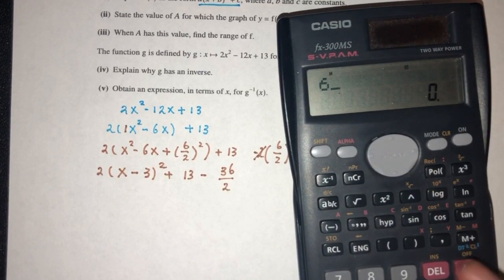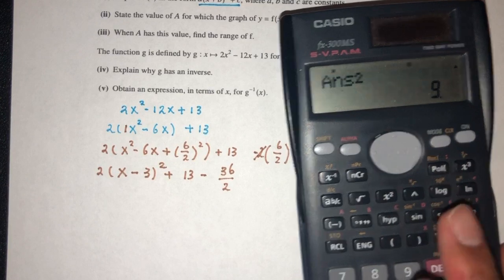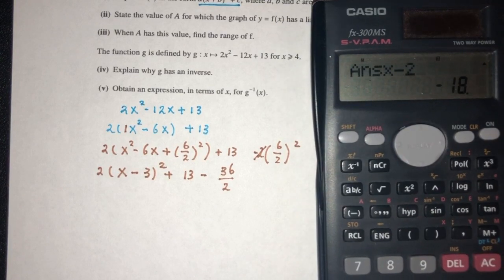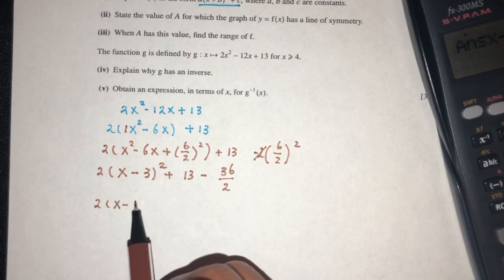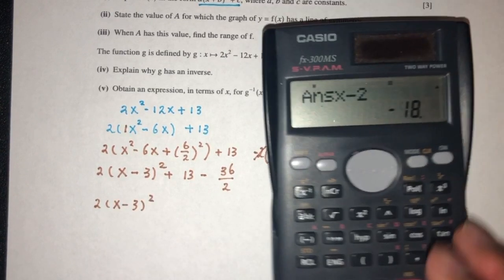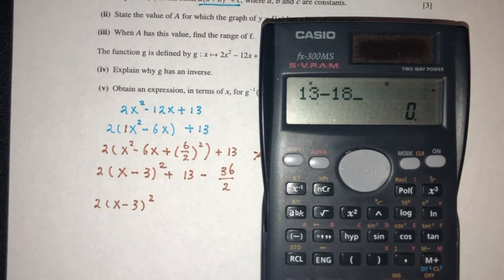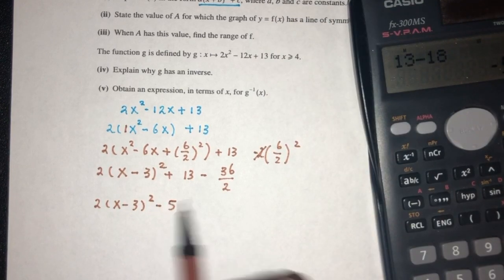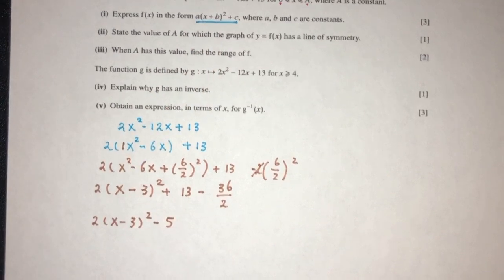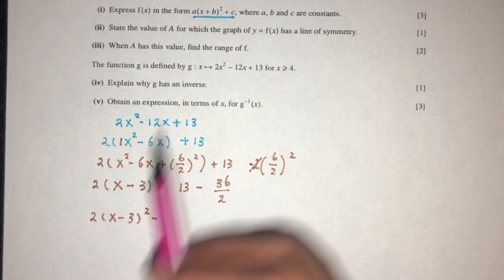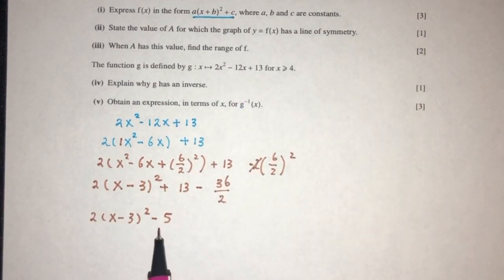So let's try. 6 divided by 2, square, times minus 2, should be minus 18. So here we have 2, x minus 3, square, 13 minus 18 should be minus 5. So here we have this in this form, where the value of a is 2, b is minus 3, and c is minus 5, by comparison. That will be part 1 of the question.